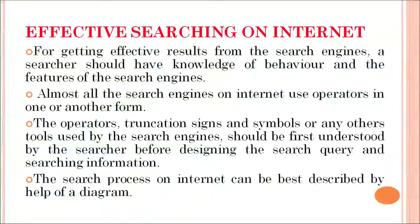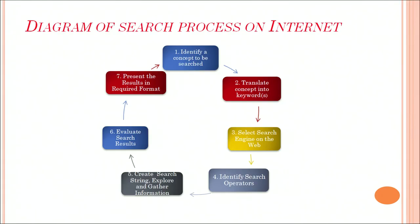For getting effective use from a search engine, a searcher should have knowledge of the behavior and features of the search engine. Almost all search engines on the internet use operators in one or another form. The operators, truncation signs, symbols, or any other tools used by the search engine should first be understood by the searcher before designing a search query and then searching for information. The search process on the internet can be best described in a diagram showing seven points on how we can start a search and how it should finally be given shape.